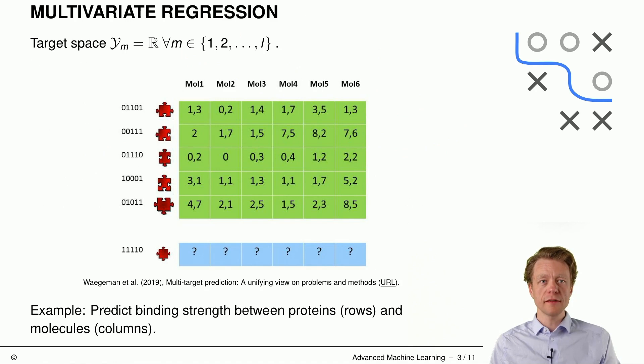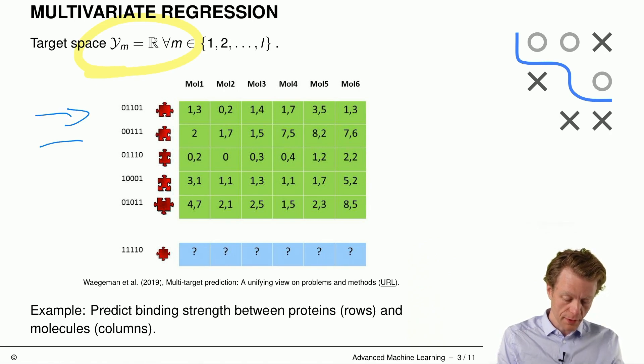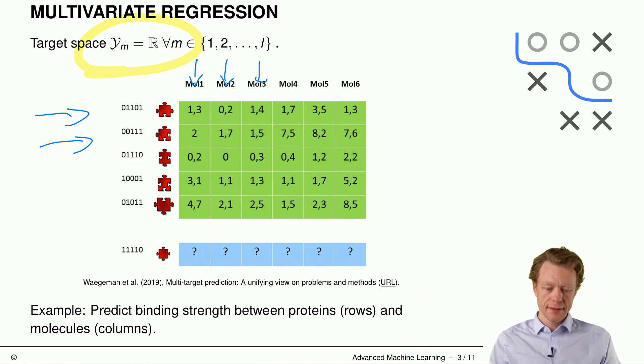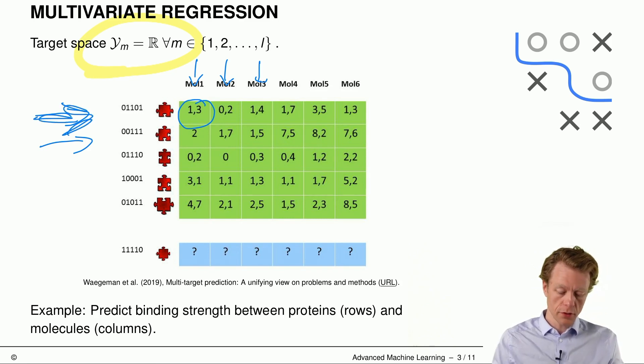First, some examples here, multivariate regression results if all the target spaces are just the real numbers. So ym is r for all the m, and we have an example here, where as always in the rows we have some instances. These are proteins in that case, and in the columns we have different targets. These are five, no, six molecules, and the numbers here show the binding strength between one protein and one molecule. So this binding strength may be a real value, and for each instance here in the rows, we want to predict the binding strength with each molecule.